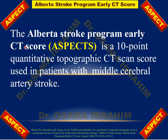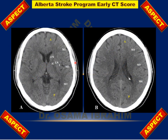The meaning of ASPECTS is the Alberta Stroke Program Early CT Score. It is a 10-point quantitative topographic CT scan score used in patients with middle cerebral artery stroke. The brain is classified into ganglionic and supraganglionic levels, divided into 10 segments, and we measure the abnormality or hypodensity of the stroke on each segment.